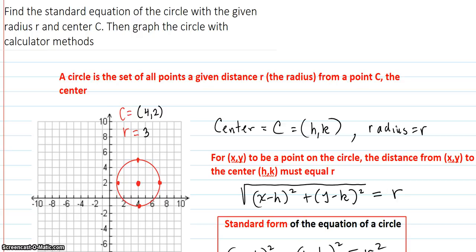Let's talk about the general formula and the standard formula for a circle. First, the circle is the set of all points a given distance r, called the radius, from a point C, called the center.